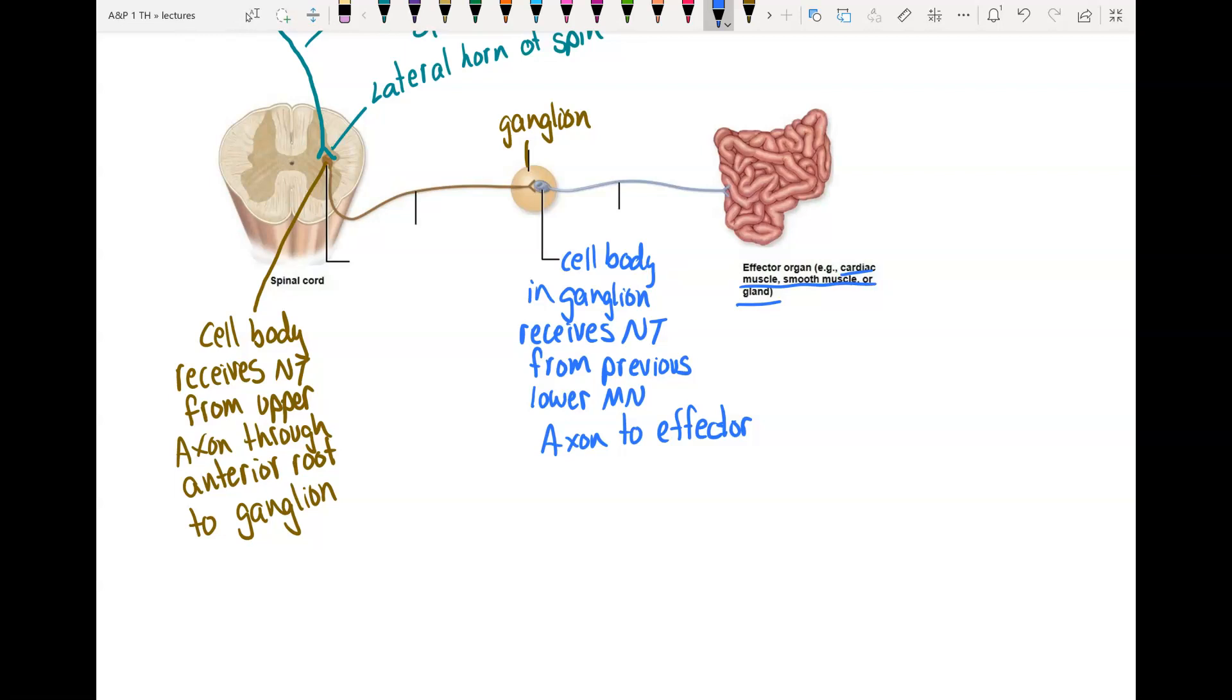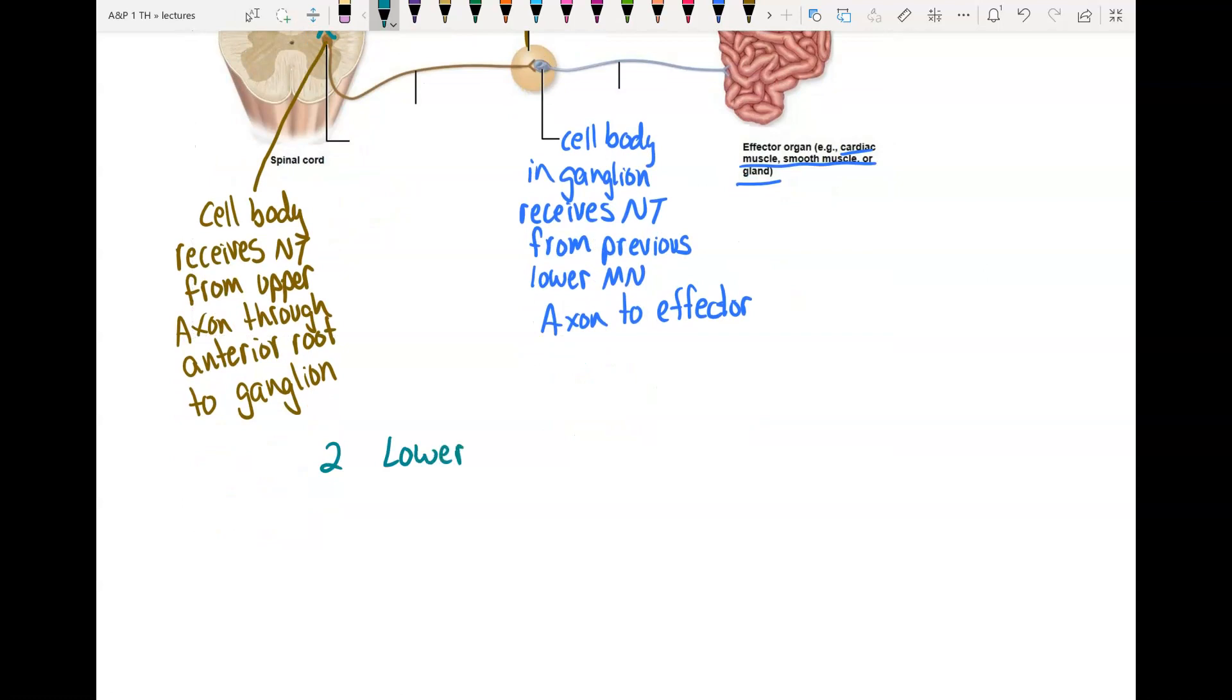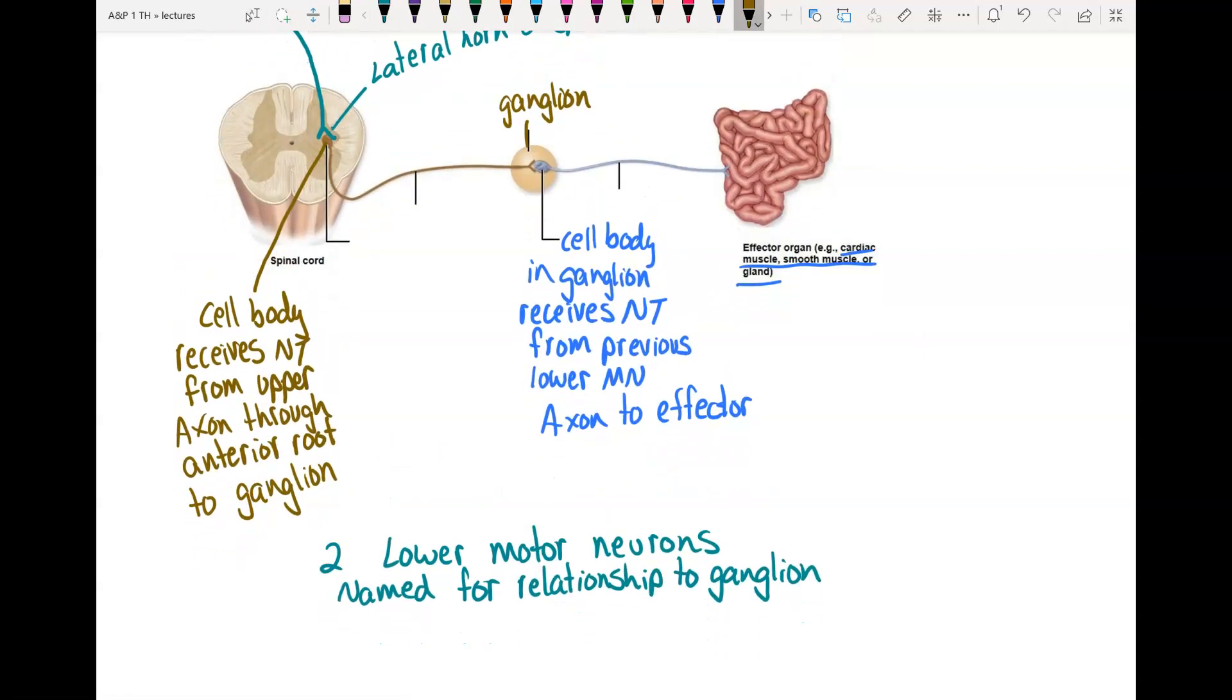So we need to name these two lower motor neurons. So here we have two lower motor neurons. And we're going to name them for their relationship to the ganglion. So this first one here, the brown one, its cell body is before the ganglion, so this is the preganglionic neuron. And sometimes instead of talking about a whole neuron, we just talk about an axon. So its axon is called the preganglionic axon.